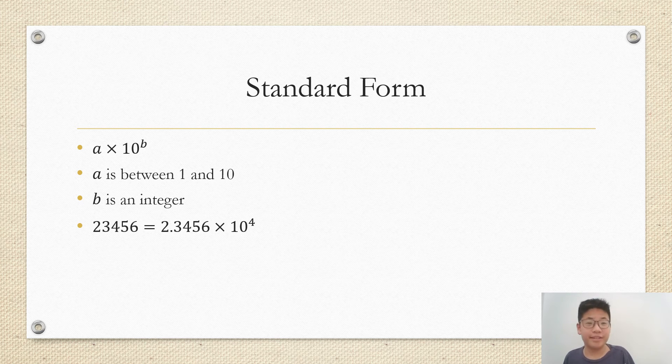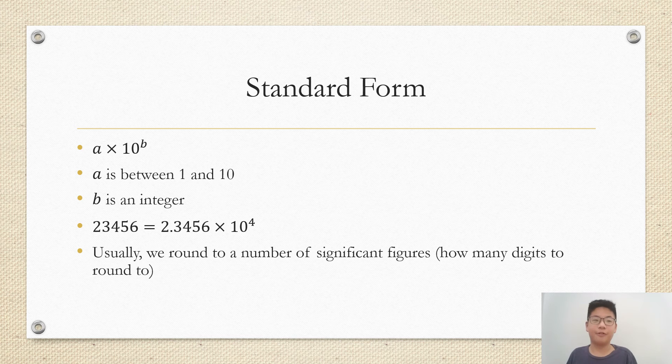23446 is 2.3446 times 10 to the power of 4 in standard form. Usually we round to a number of significant figures, or we just basically say how many digits that you must round to.